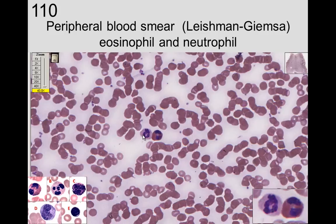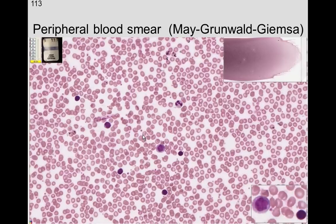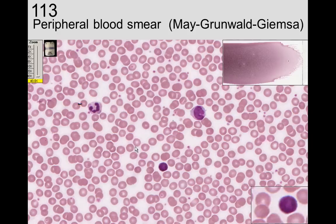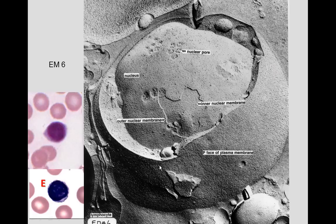We see the basophil with granules that are hard to see clearly. Two cells with lobulated nuclei are identified as an eosinophil and a neutrophil. On slide 113, we see another monocyte, multiple lymphocytes, a neutrophil, and small platelets. We also see a nice monocyte, red blood cells, and platelets as smaller formed elements.